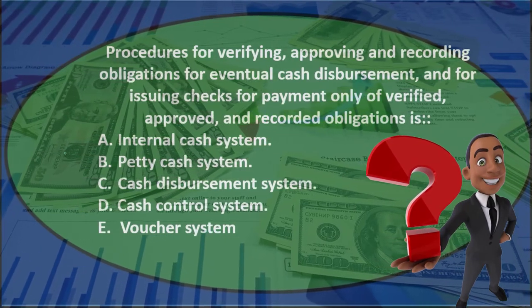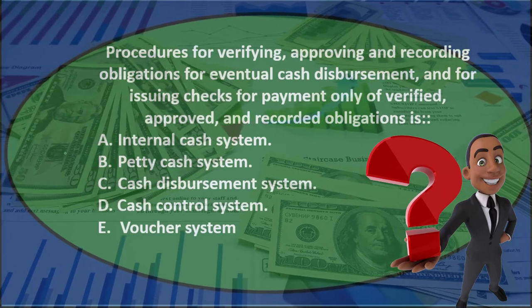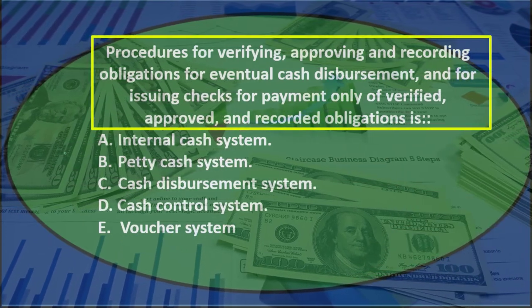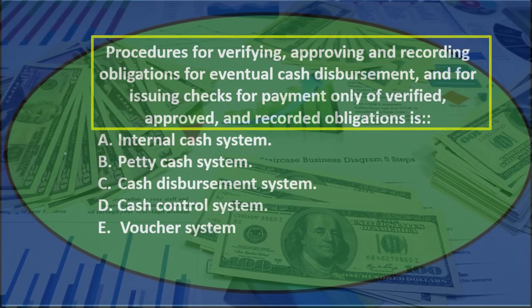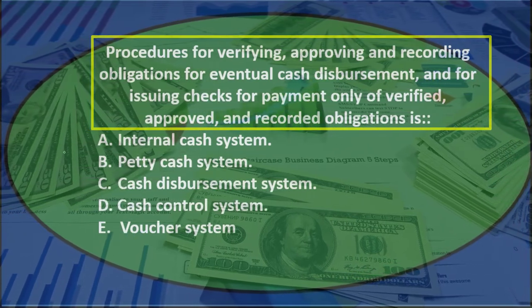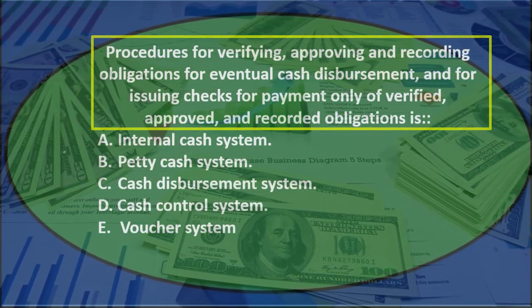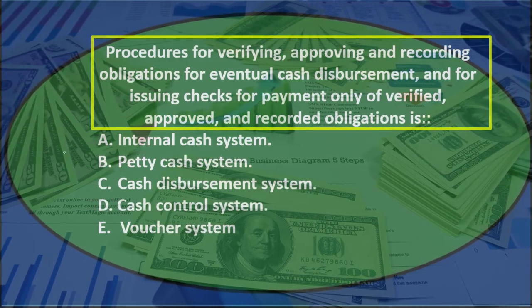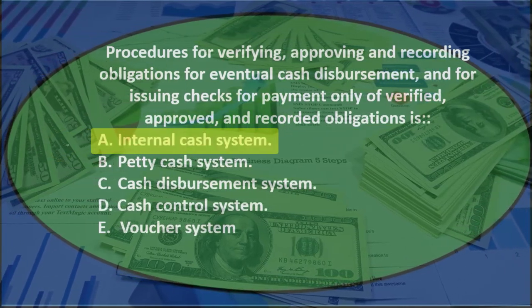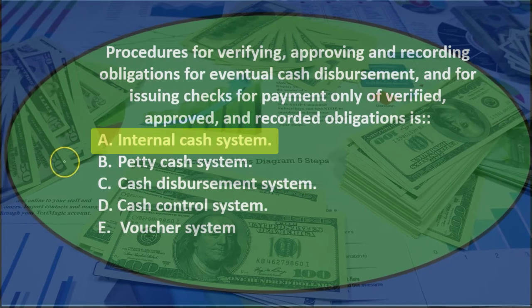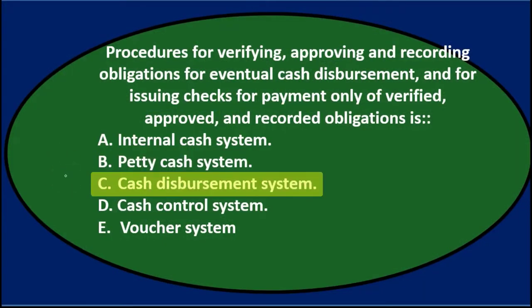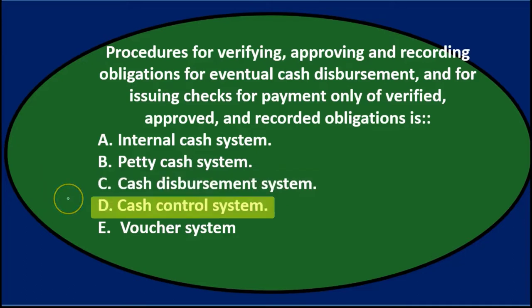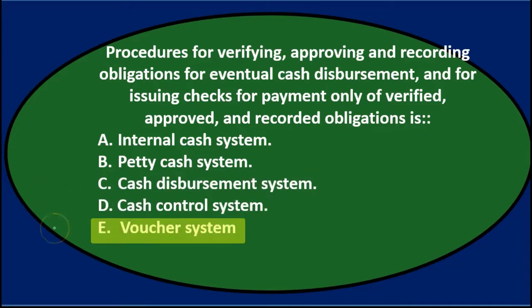Next question. Procedures for verifying, approving, and recording obligations for eventual cash disbursements, and for issuing checks for payment only of verified, approved, and recorded obligations is: A internal cash system, B petty cash system, C cash disbursement system, D cash control system, or E a voucher system.